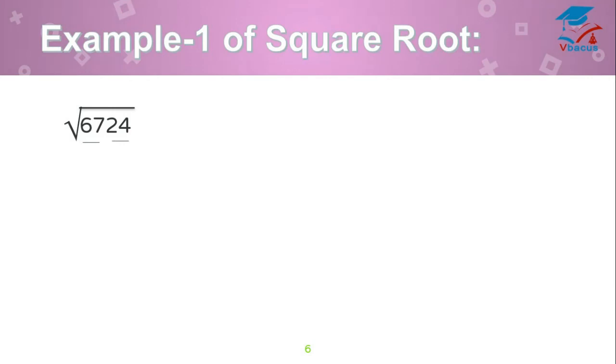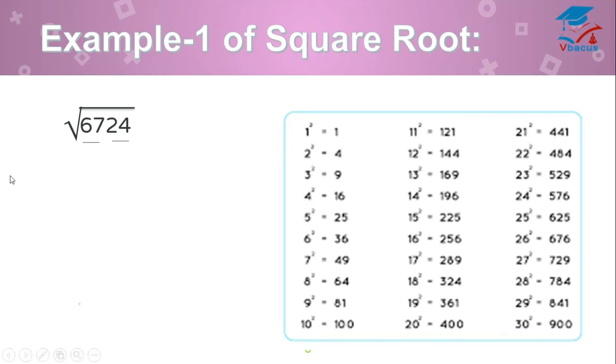Now, find the square root of 6724. Make it into 2 parts. Last 2 digits, part 1 and remaining digits, part 2. So, last digit of the sum is 4. See, 4 here and 4 here. Square root of 4 is 2. So, your unit place will be either 2 or 8 because 24 ends with 4.